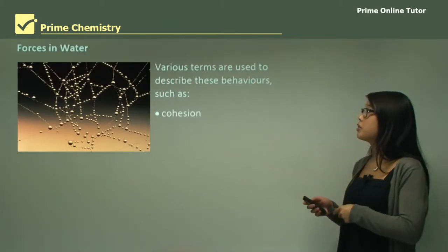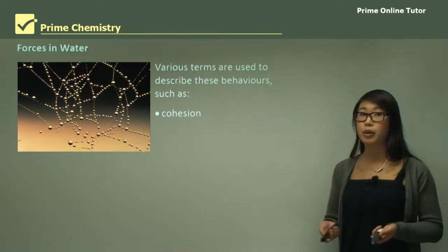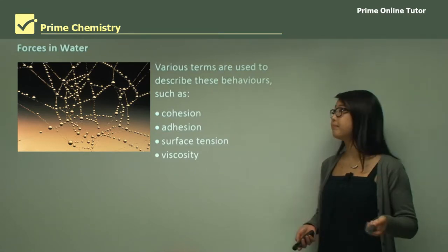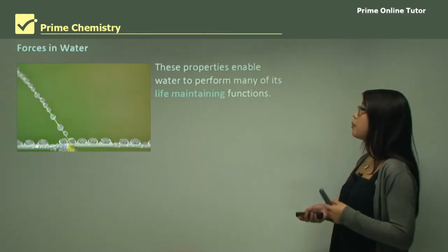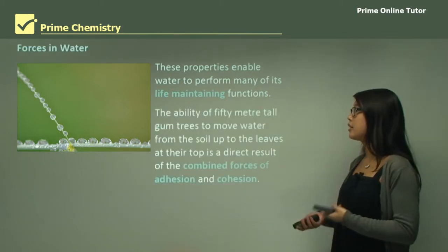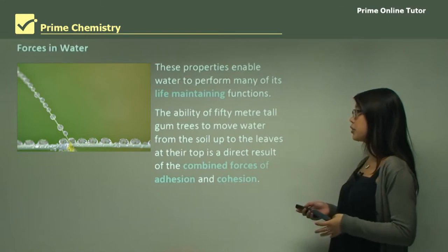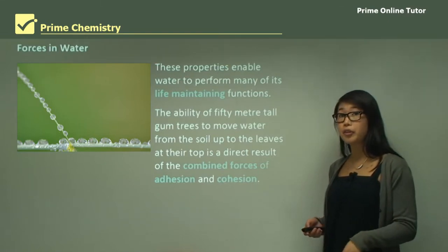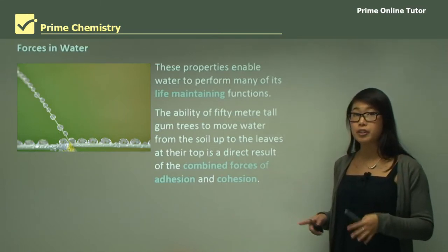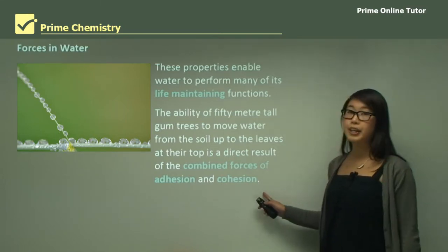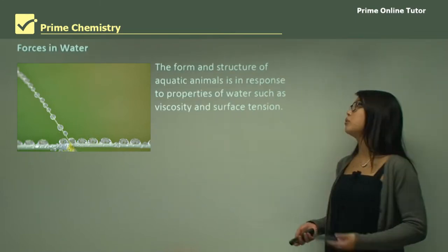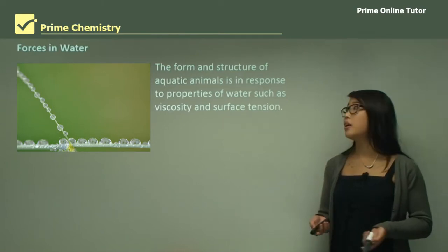Various terms are used to describe the behaviours of water, and we'll be looking at cohesion, adhesion, surface tension, and viscosity. These properties enable water to perform specific life-maintaining functions, such as the ability of a 50-metre gum tree to move water from the soil in the ground all the way up to the leaves at the top of the tree — a result of a combination of forces involving adhesion and cohesion. The form and structures of aquatic animals is also in response to properties of water, specifically viscosity and surface tension.